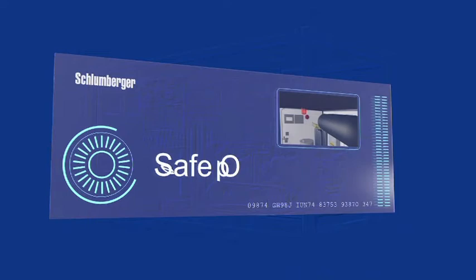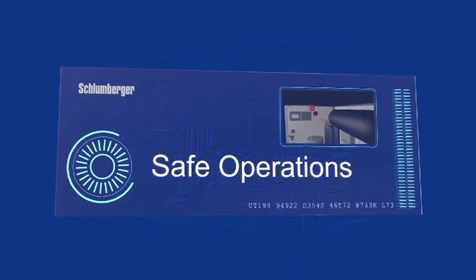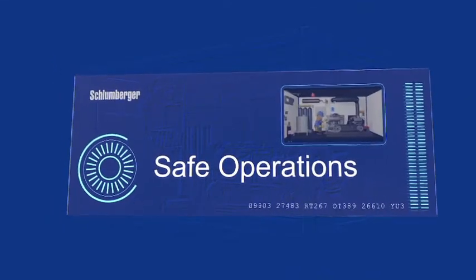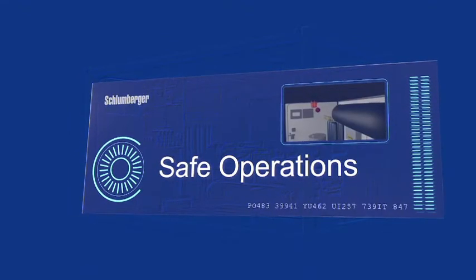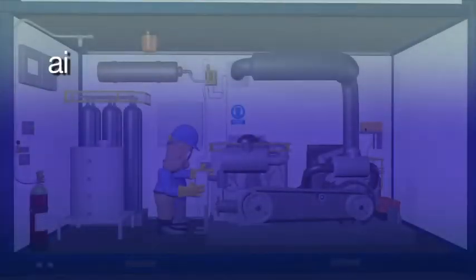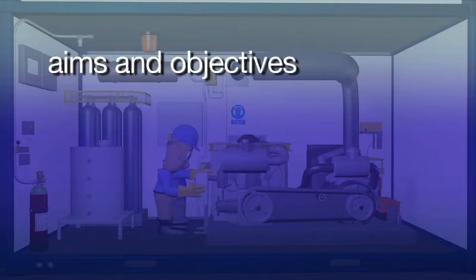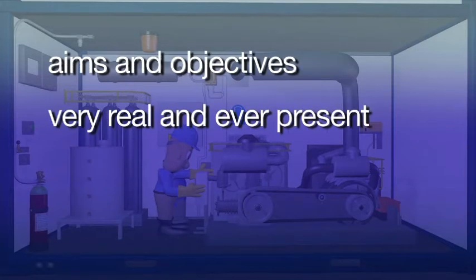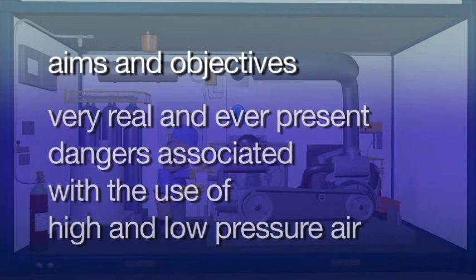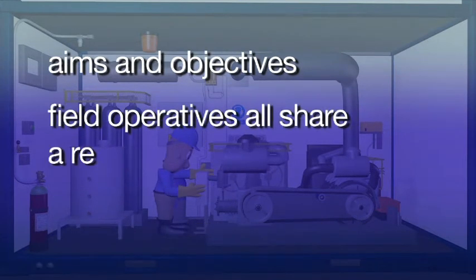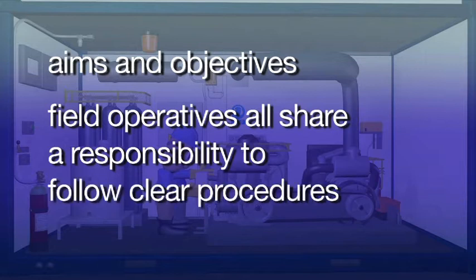Hello and welcome to the fourth module of your Schlumberger training video for the WAC-QB and WAC-SS23. This module focuses on safe operations. The aim of this module is to show you the very real and ever-present dangers associated with the use of high and low pressure air, and that you as field operatives all share a responsibility to follow clear procedures designed to ensure the safety of you, your colleagues and associated equipment.